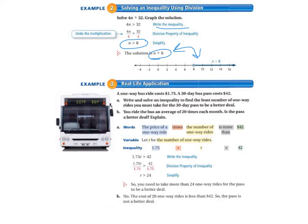Letter B, you ride the bus an average of 20 times each month. Is the pass a better deal? Explain. So let's start with letter A. The words: The price of a one-way ride times the number of one-way rides is more than $42.